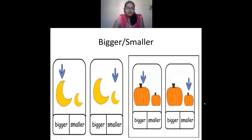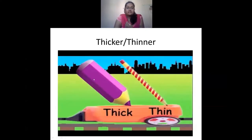Coming to bigger and smaller — bigger means something which is large and smaller means something which is little. The first moon is bigger and the second one is smaller. The same way with the pumpkins, the first pumpkin is bigger because it is large and the second is smaller. Thicker and thinner means when an object is very wide. The first pencil is thicker and the second one is thinner.